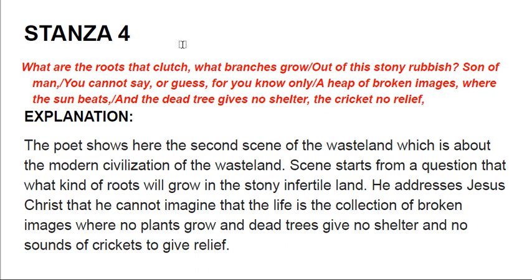Moving towards the fourth stanza: 'What are the roots that clutch, what branches grow out of this stony rubbish, Son of Man? You cannot say or guess, for you know only a heap of broken images, where the sun beats, and the dead tree gives no shelter, and the cricket no relief.' The poet shows the second scene of the wasteland — the modern civilization. He addresses Jesus Christ, saying that life is a collection of broken images where no plants grow, dead trees give no shelter, and there is no cricket song to give relief.